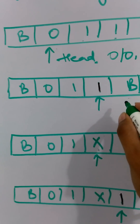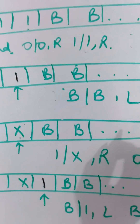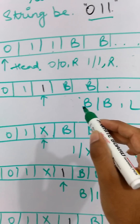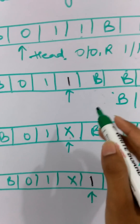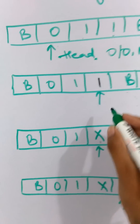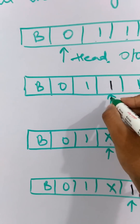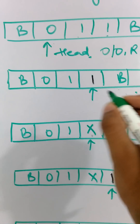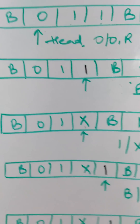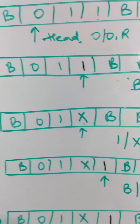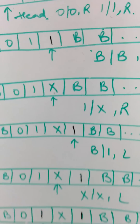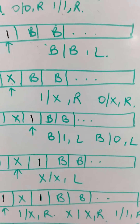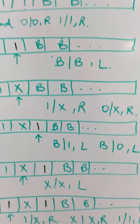After reaching the blank it will move left. So replace blank with blank and move to left. Then it will get this 1, which is the last character of the string. Then what it will do, it will replace that 1 with x and then it will move to the right.